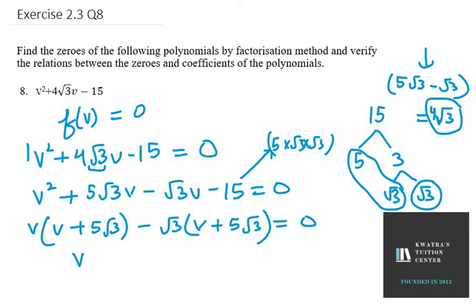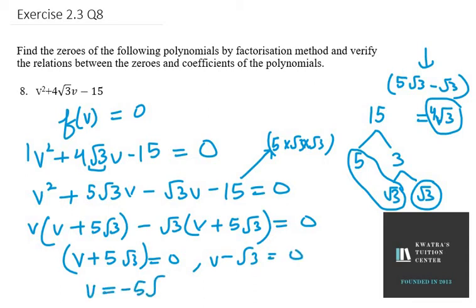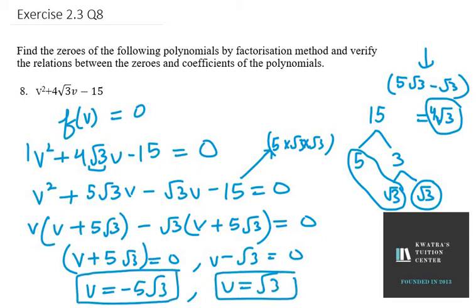So we have two zeros: v + 5√3 = 0 and v - √3 = 0. This gives us the first zero as -5√3 and the second zero as √3.